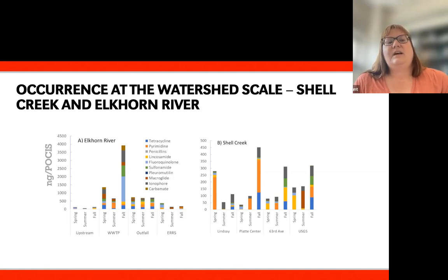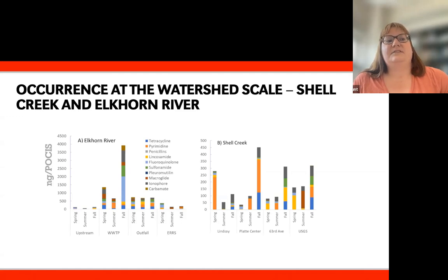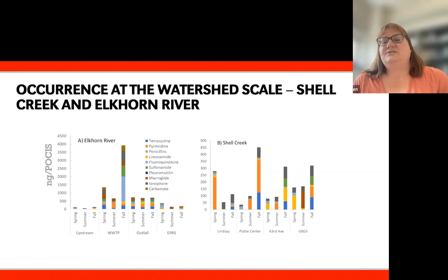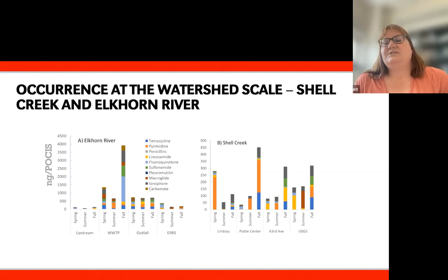In Shell Creek, the watershed is not dominated by municipal wastewater — it's very predominantly driven by manure application to cropland, with only septic or smaller treatment systems. The scale is different; we see much lower overall concentrations in Shell Creek, though we still detect these compounds. Some sampling locations show higher concentrations in spring, which we attribute to a spring flush where compounds build up on the soil surface and are carried off during the first precipitation events. We also sometimes see higher concentrations in fall, corresponding to October or November when base flow is lower, so antibiotic concentrations may be a bit higher.